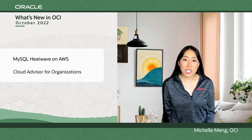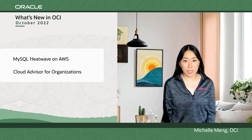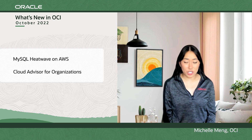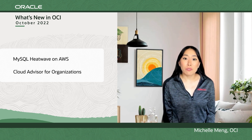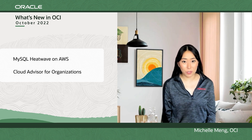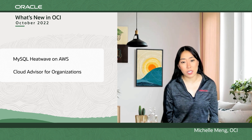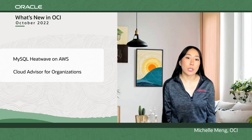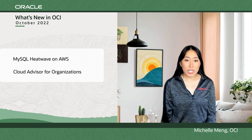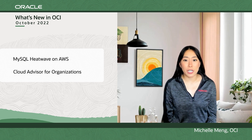Next, let's talk about Cloud Advisor for organizations. Oracle is really building out the organizations feature. Now you can view Cloud Advisor recommendations for all your child tenancies at the parent tenancy level — think performance improvement opportunities, cost savings options, and improving security. All this can happen at the parent tenancy level, making it easier than ever to manage large OCI environments.